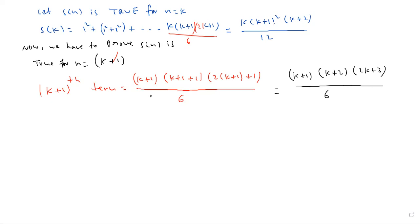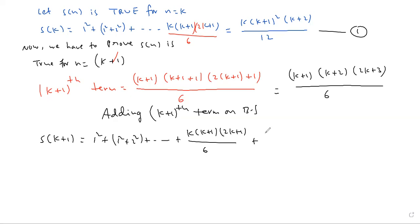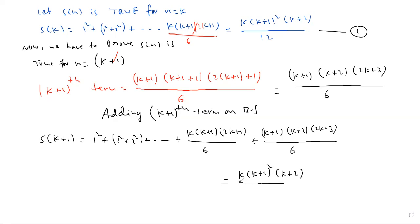Adding the (k+1)th term on both sides: S(k+1) = 1² + 2² + ... + k(k+1)(2k+1)/6 + (k+1)th term. So the LHS becomes k(k+1)(2k+1)/6 + (k+1)(k+2)(2k+3)/6. The RHS is k(k+1)²(k+2)/12 + (k+1)(k+2)(2k+3)/6.